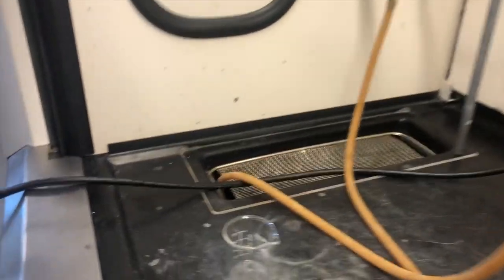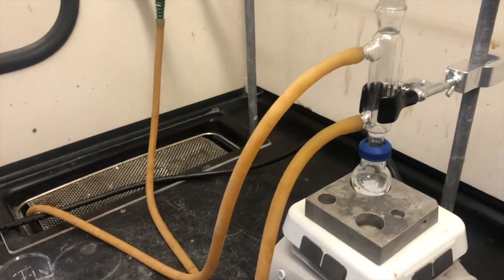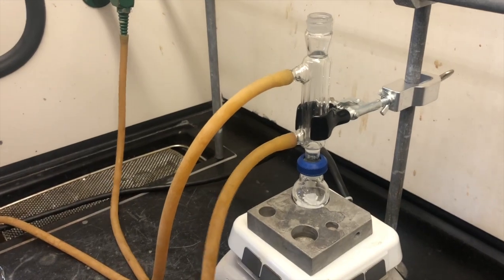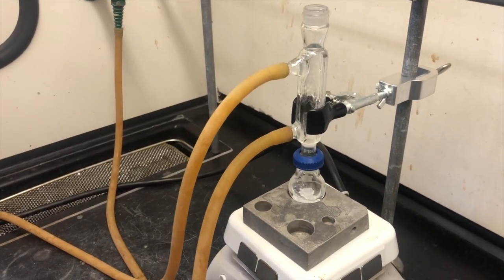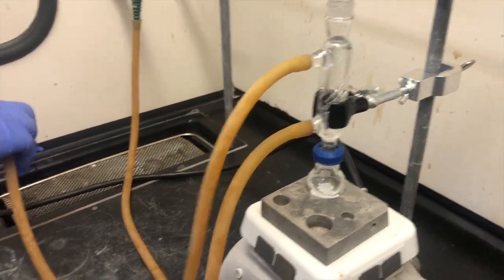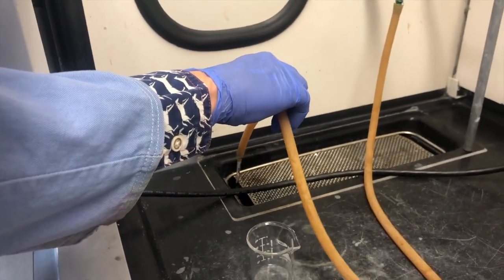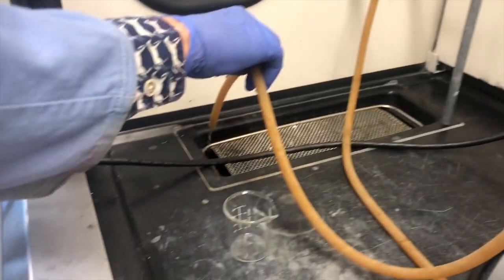Once all the hoses are tight and snug, we can gently turn on the water slowly at first. The water then fills the outer jacket of the water condenser. Often the water has air bubbles in the line at first and so you have to wait for a while to make sure you get a steady flow.